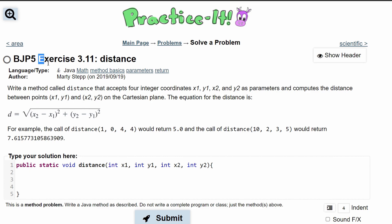For practice it exercise 3.11 distance, we are asked to write a method called distance that has four parameters and computes the distance between the points. Then we are going to return a double of the result.